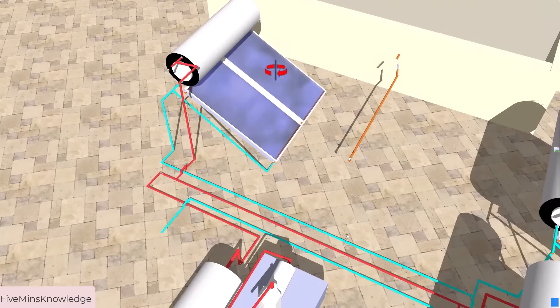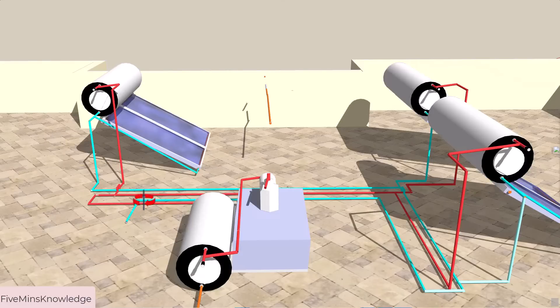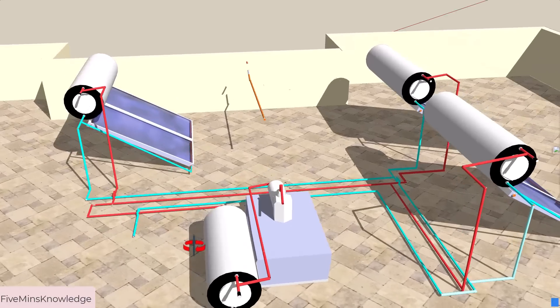This is the same pipe assembly that I have shown you earlier, just covered with glass. This is the cold water coming from the submersible pump of the building. This cold water line is connected to every heater tank.